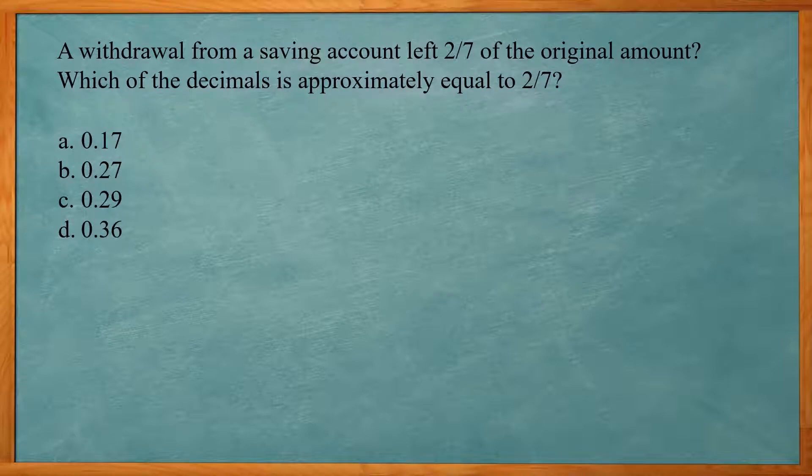This one says the withdrawal from a savings account left two sevenths of the original amount, which of the decimals is approximately equal to two sevenths. In order to do this, we really need to do long division. So this is basically saying two divided by seven.